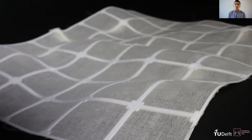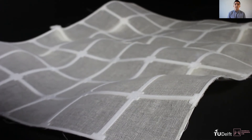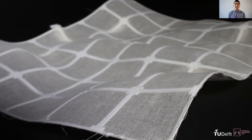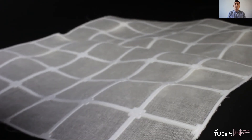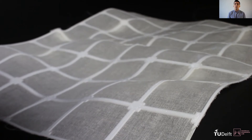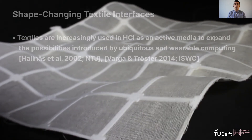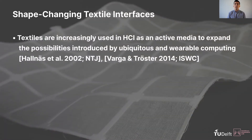Textiles are increasingly used in design and HCI as an active media to expand the possibilities introduced by ubiquitous and wearable computing when combined with sensors, actuators, and smart materials. Specifically, shape-changing textile interfaces introduce a new variable — temporality — in the creation of diverse form expressions.